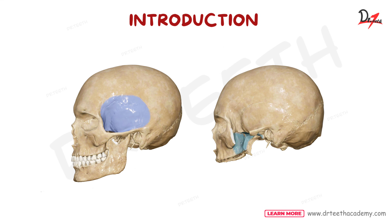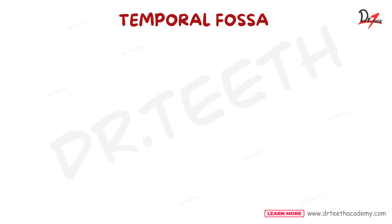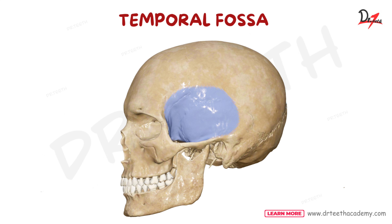Basically, muscles that are used while mastication are part of this region. Temporal fossa is a depressed area on each side of the skull in the temporal region. Here we can see this depression on the side of the skull — this depressed area is the temporal fossa.